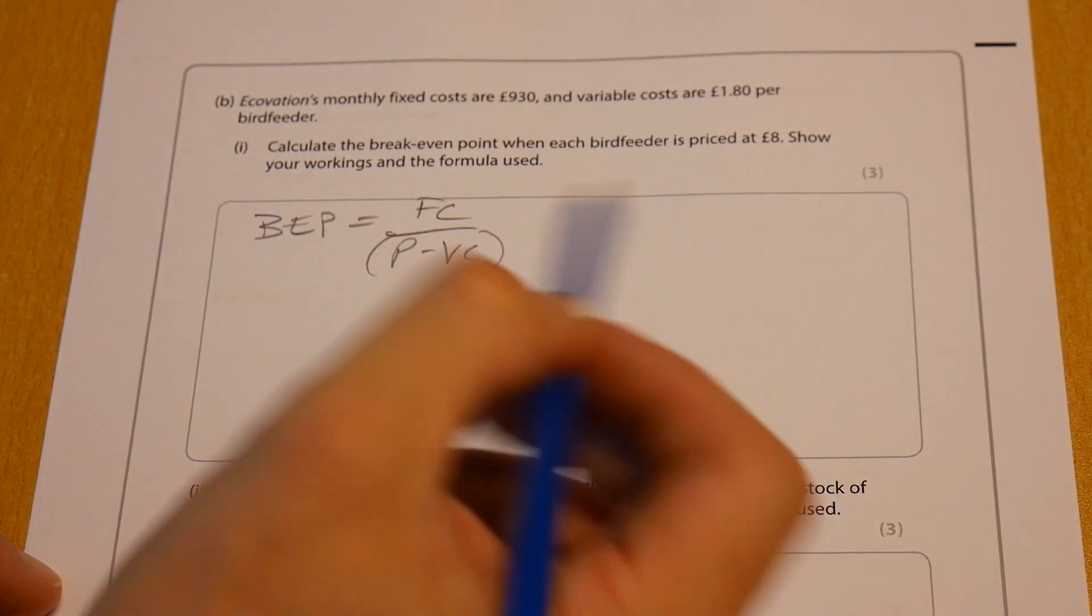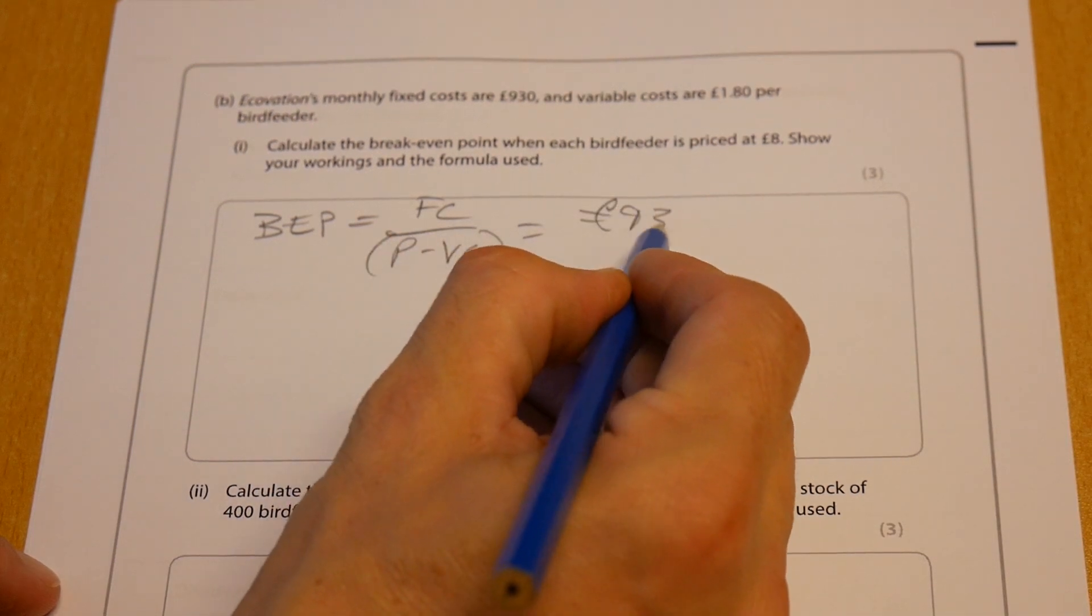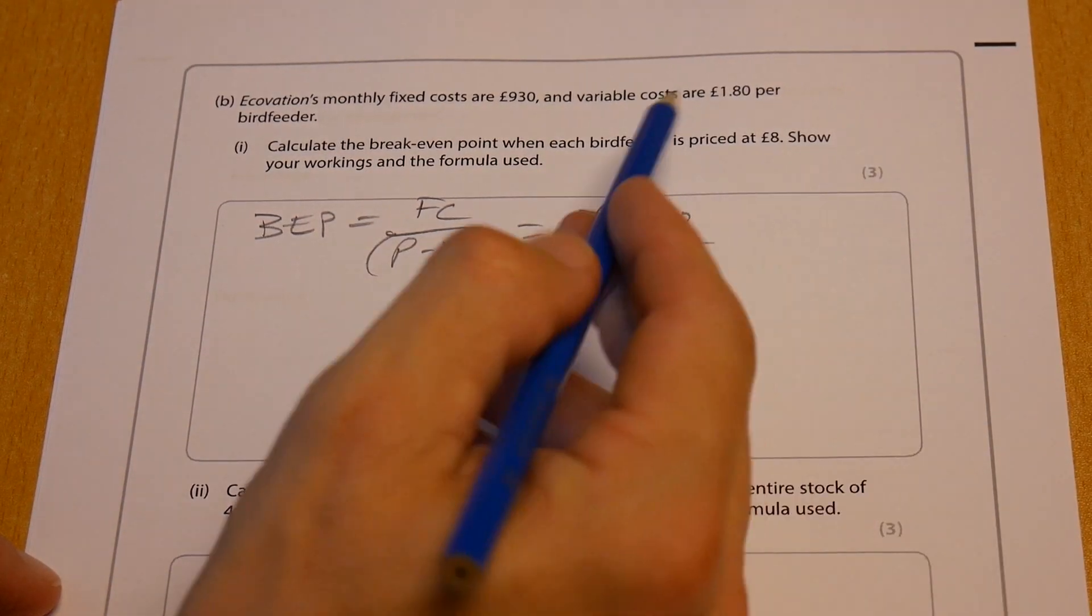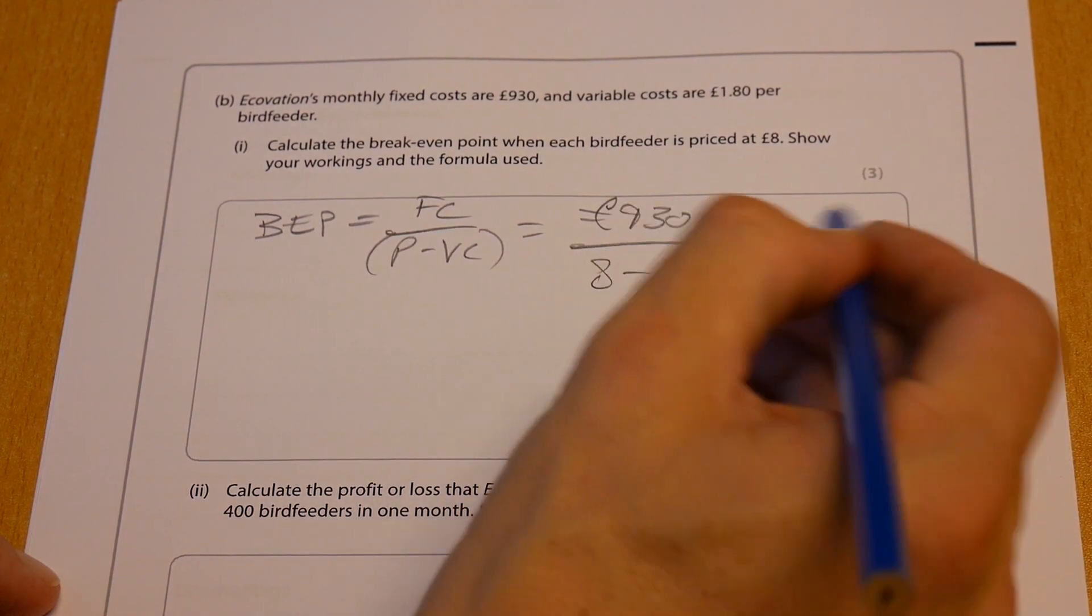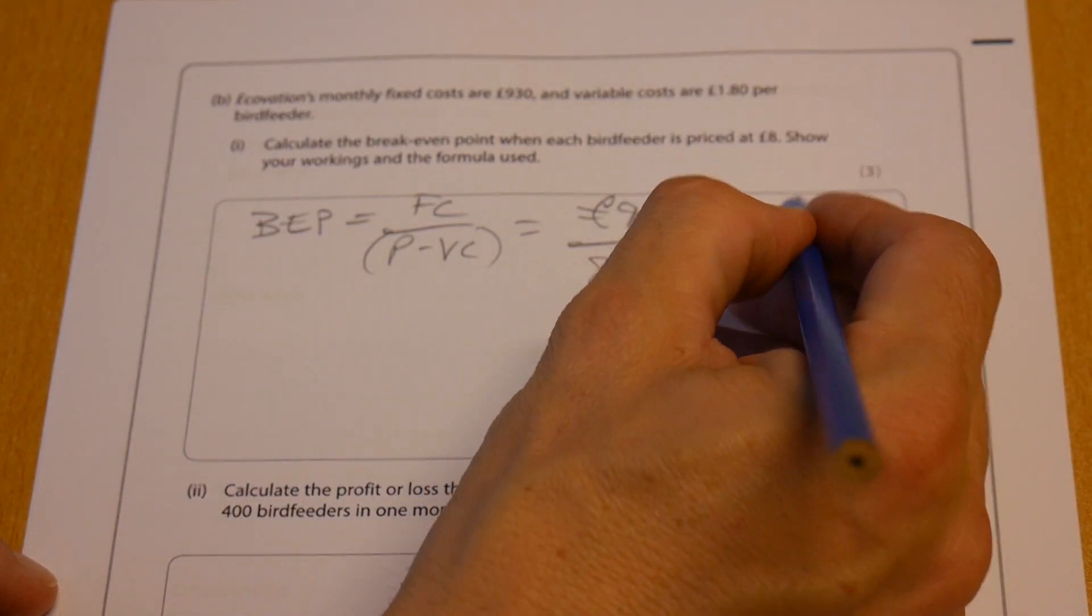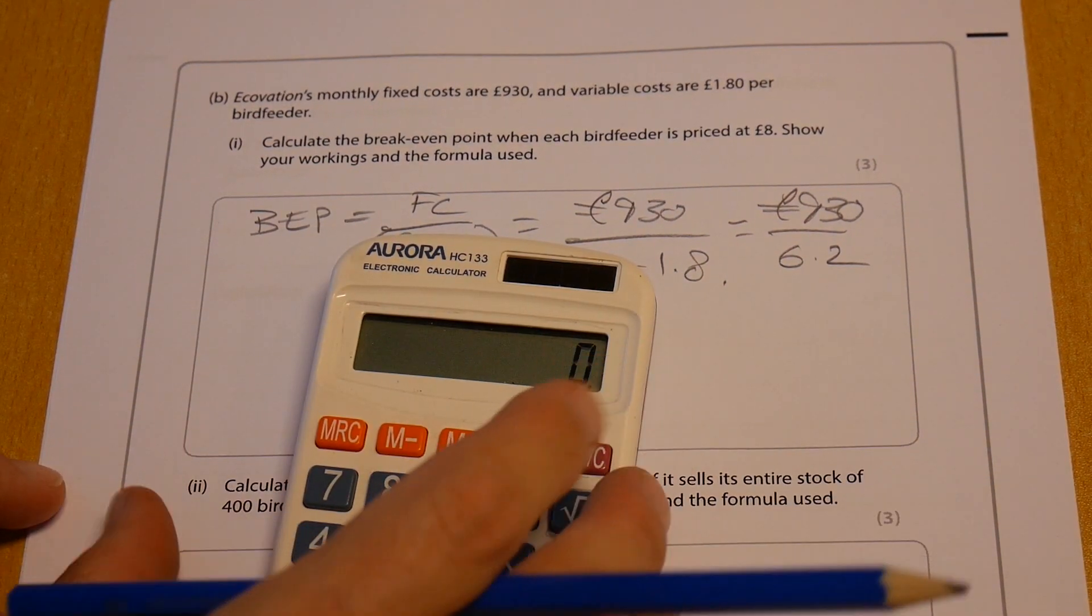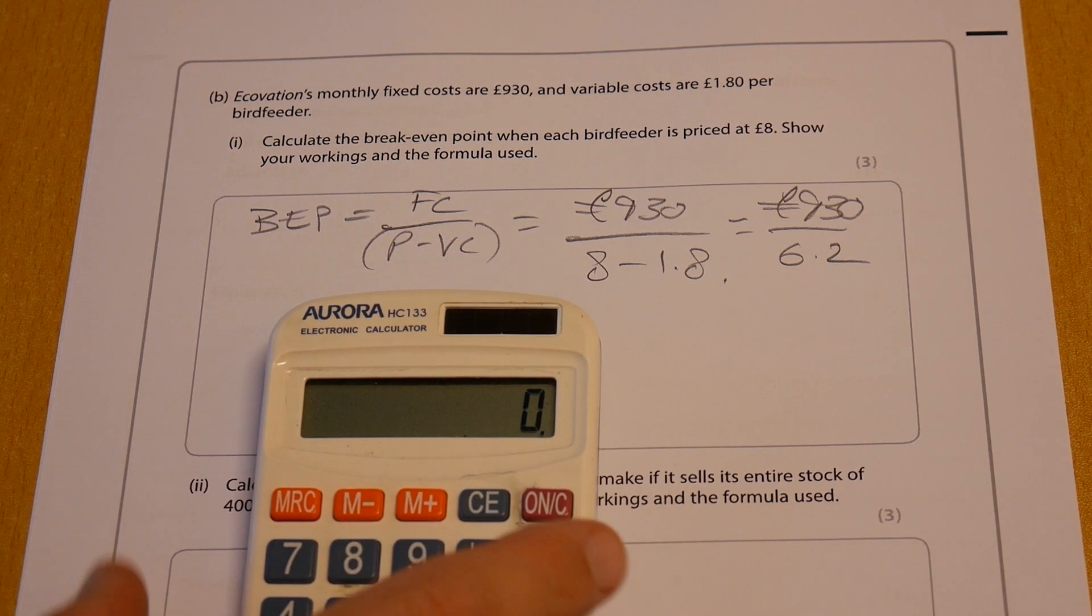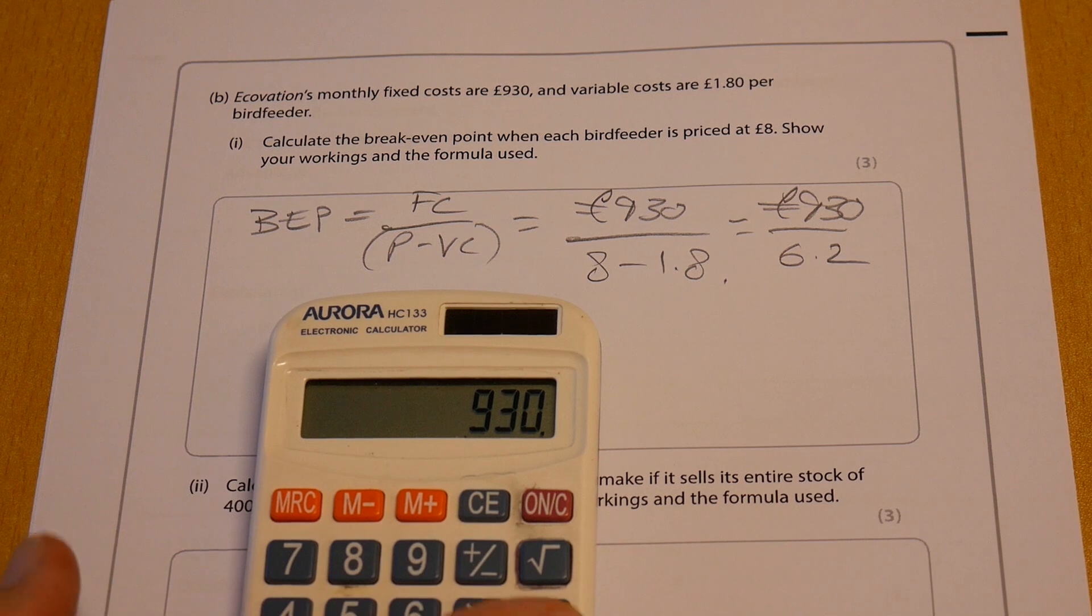So what does this mean? It means that you've got £930 divided by a price of eight pounds minus one pound eighty. So we've got therefore, let's just rewrite that as six pound twenty. So 930 divided by six pound twenty. Let's just put that through. Oh, you can see how easy it is to make mistakes like my clumsy fingers there.